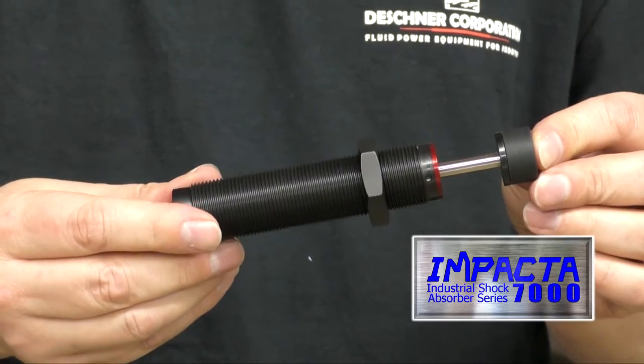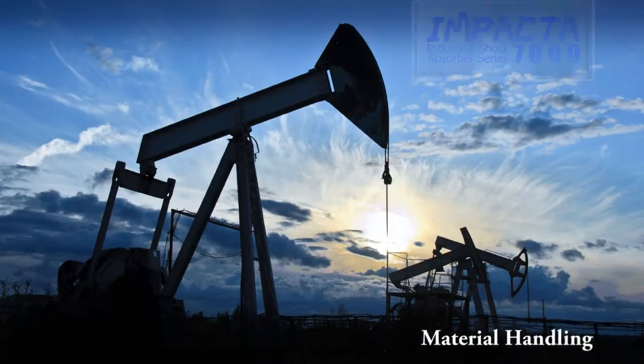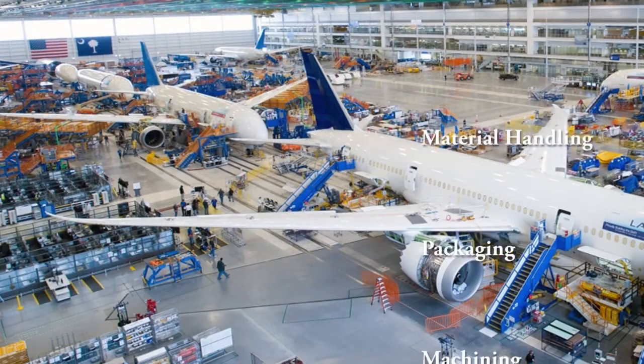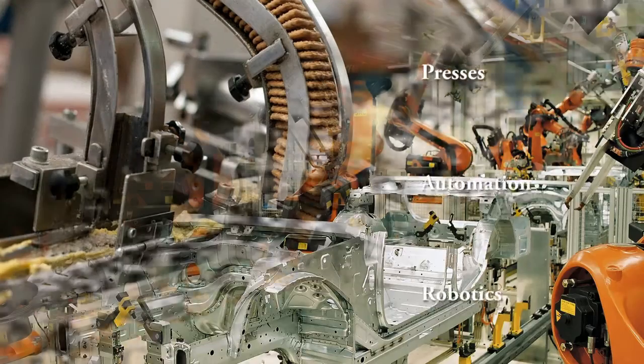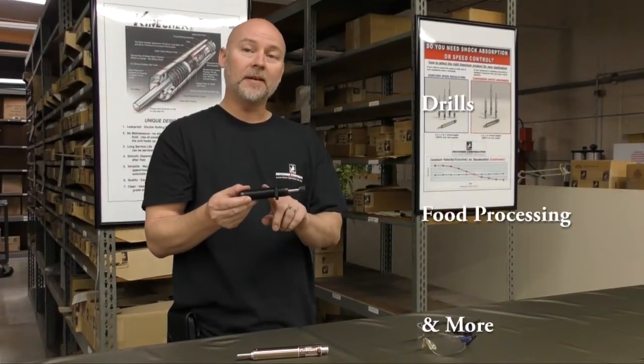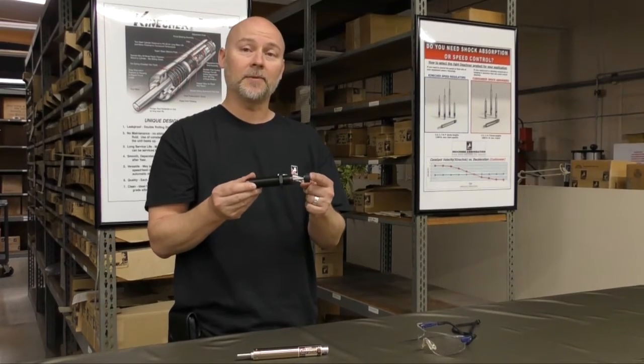It's a self-adjusting inline hydraulic shock that's used in every level of production and every industry from material handling, machining, automation, the list goes on and on. And since it uses an FDA approved silicone fluid, it's widely used in food processing applications.